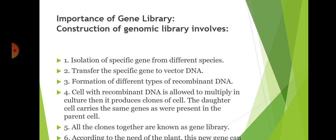The construction of a genome library involves: isolation of a specific gene from different species and transfer to vector DNA; formation of different types of recombinant DNA; allowing cells with recombinant DNA to multiply in culture, producing clones; daughter cells carry the same genes as the parent cell; all the clones together are known as the gene library. According to the need, a new gene can be incorporated to produce a transgenic plant.